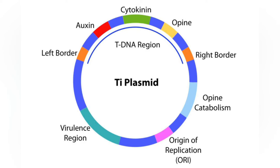The two plasmids are pTiC-58, responsible for the processes involved in virulence, and pACT-58, once dubbed the cryptic plasmid. The pACT-58 plasmid has been shown to be involved in the metabolism of opines and can conjugate with other bacteria in the absence of the pTiC-58 plasmid.